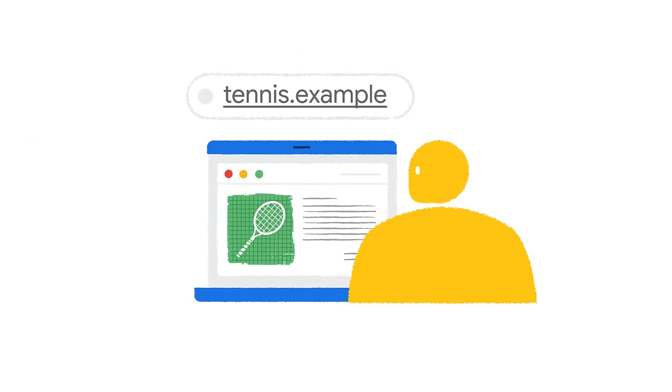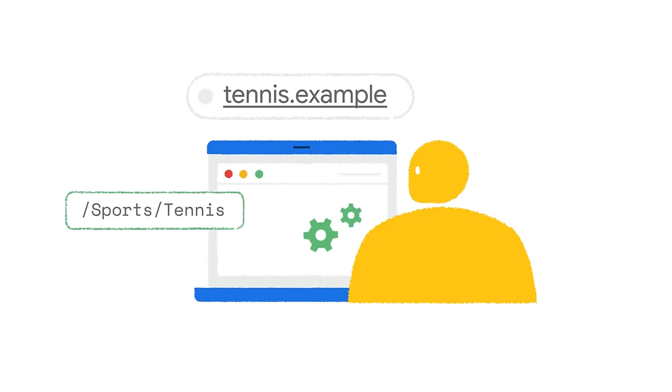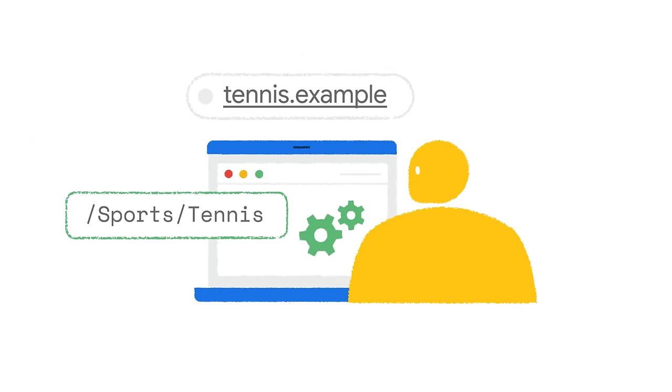Topics is a mechanism to enable a web browser to share information about a user's interests, but without revealing anything more about the user's browsing activity. The topics of interest shared by the API can be used to help select advertising that's relevant for people based on their interests — for example, showing an ad for tennis shoes to a person who's interested in tennis. That's known as interest-based advertising.